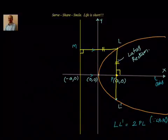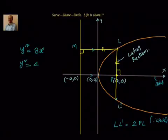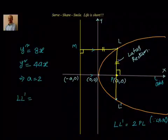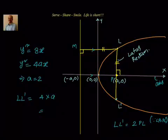Let us do one simple example. Find the latus rectum of y² = 8x. This is in the form y² = 4ax. Comparing, 4a = 8, so a = 2. The length of the latus rectum = 4a = 4 × 2 = 8.